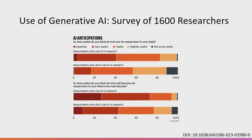There was a study I want to talk about — a study of 1,600 researchers throughout the world, published in Nature. It looked at what researchers think of generative AI like ChatGPT, asking how useful they think AI tools are for researchers in their field. About 80% of respondents who use AI said they were between essential to useful, while around 50% of non-users said AI tools would be essential, very useful, or useful.